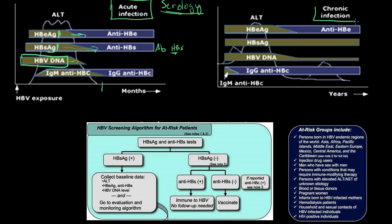In a chronic infection, your hepatitis B double-stranded DNA never quite clears, unlike in acute infection — it's still there years and months after you have it. The biggest and most important thing to note is your hepatitis B surface antigen also never clears; it's always there. Your E antigen may or may not clear in a chronic hepatitis B infection. The surface antigen and hepatitis B DNA are both persistently present.